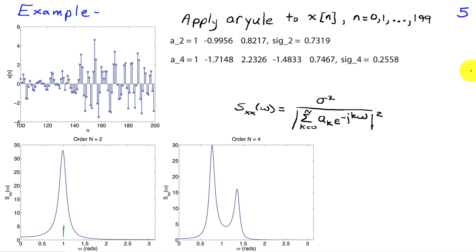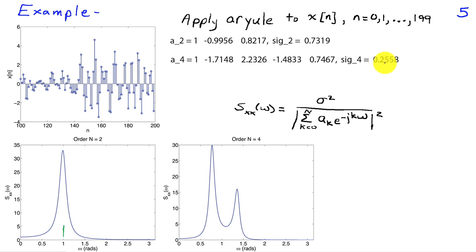Increasing to an order 4 autoregressive model with N equals 4 gives new coefficients: a_0 equals 1, a_1 equals negative 1.7148, along with a_2, a_3, and a_4, with noise variance sigma squared equal to 0.25. This is a significant drop in error from 0.73 to 0.25 — almost a factor of 3. The power spectral density of this model now shows evidence of two resonances: one in the vicinity of pi over 4, and another around 1.4 radians.